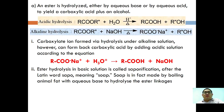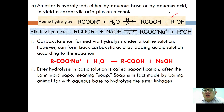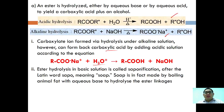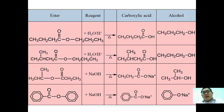Acidic hydrolysis: an ester is hydrolyzed by aqueous acid or aqueous base to yield carboxylic acid plus an alcohol. Alkaline hydrolysis produces a carboxylate ion, which can be converted back to carboxylic acid by adding acid. Hydrolysis in basic solution is called saponification, from the Latin word for soap. Soap is made by boiling animal fats with aqueous base to hydrolyze the ester linkage.